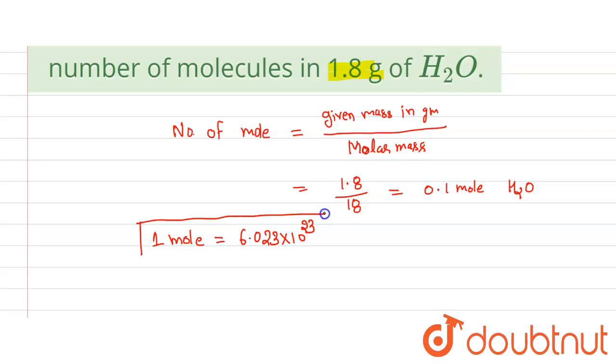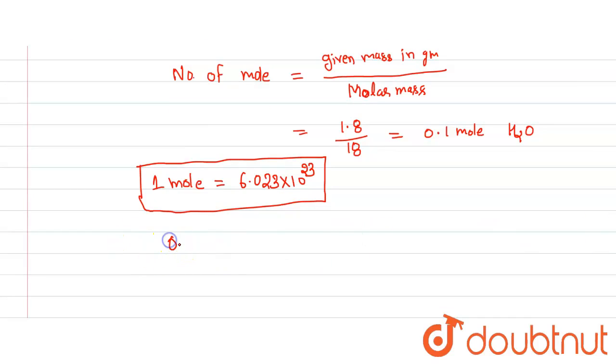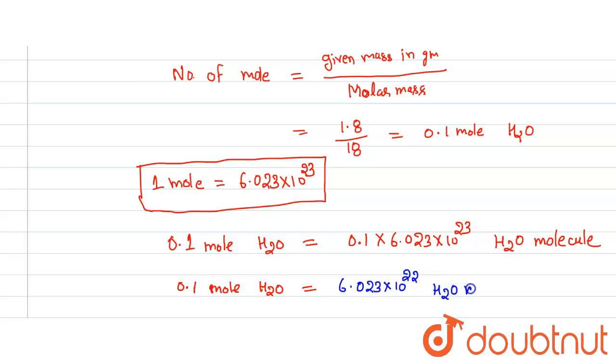So here, 0.1 mole of H2O equals 0.1 × 6.023 × 10^23, which equals 6.023 × 10^22 H2O molecules. This is our answer.